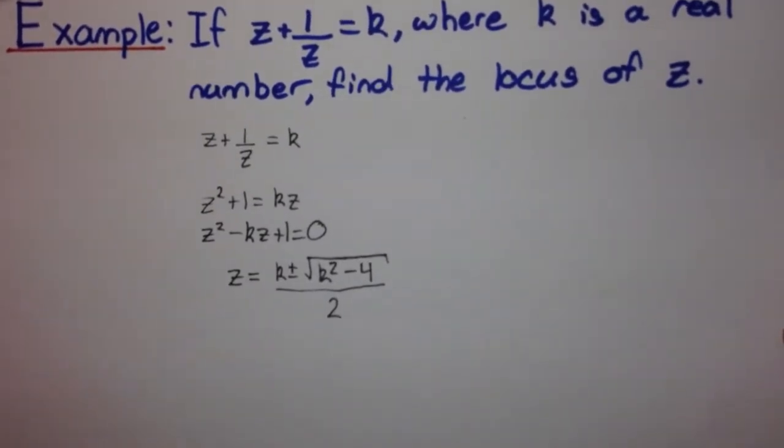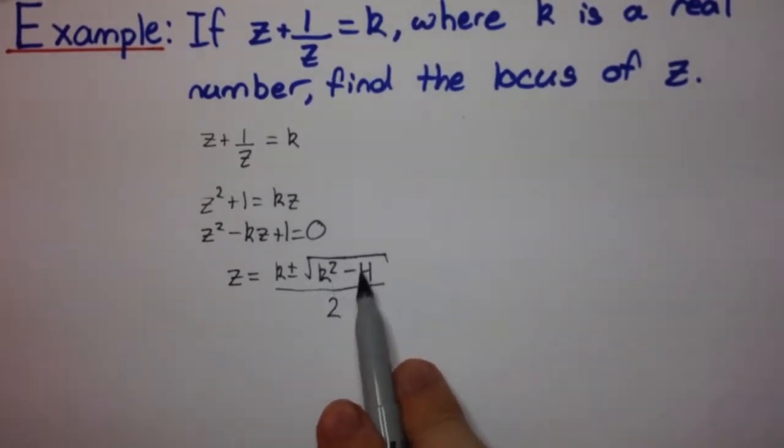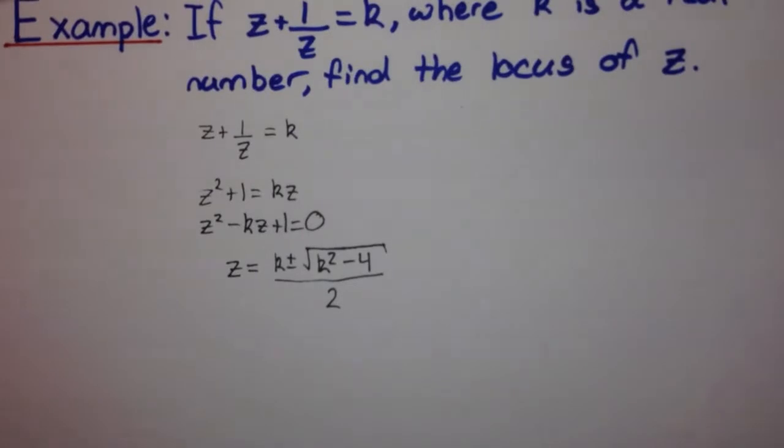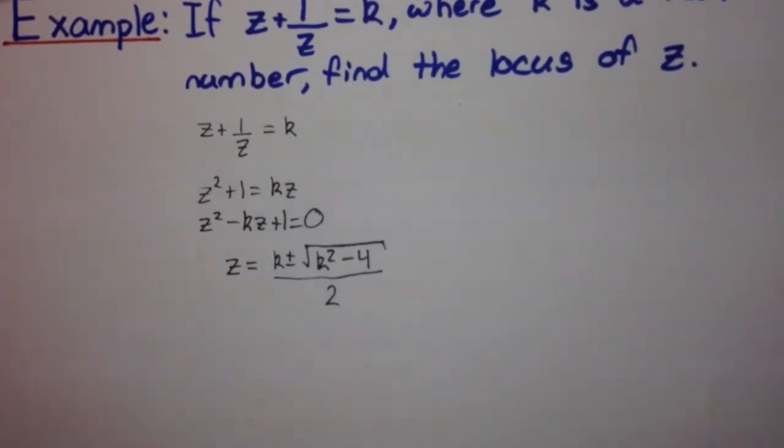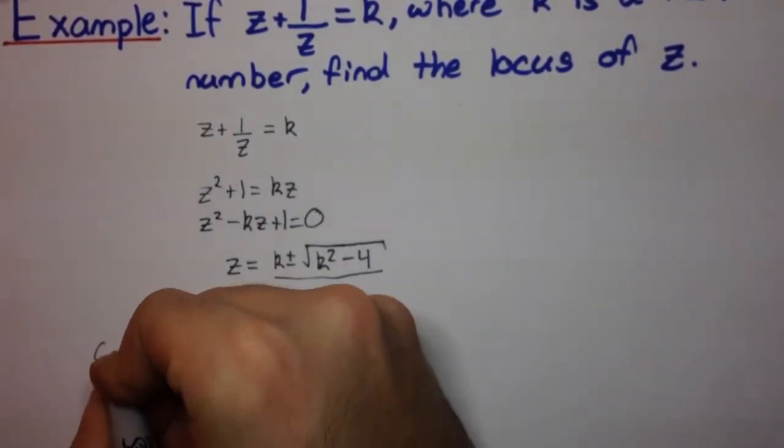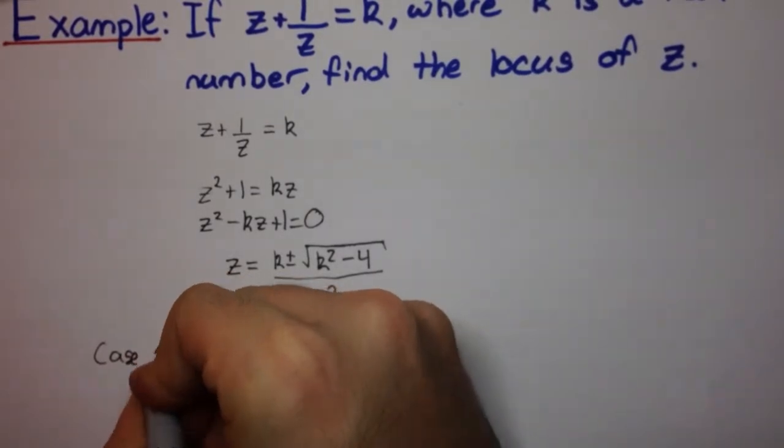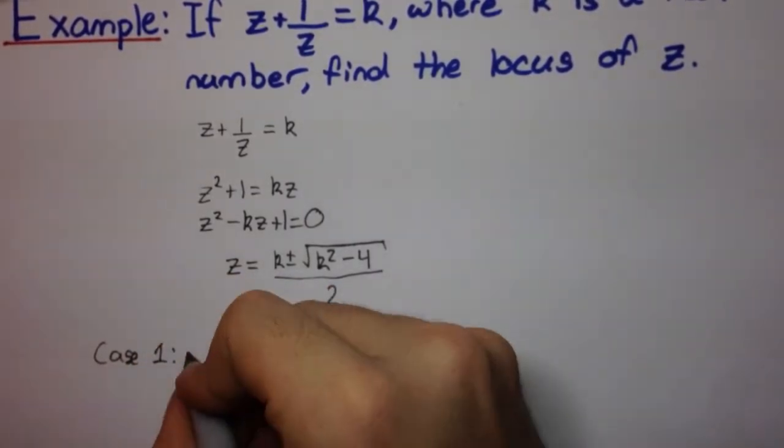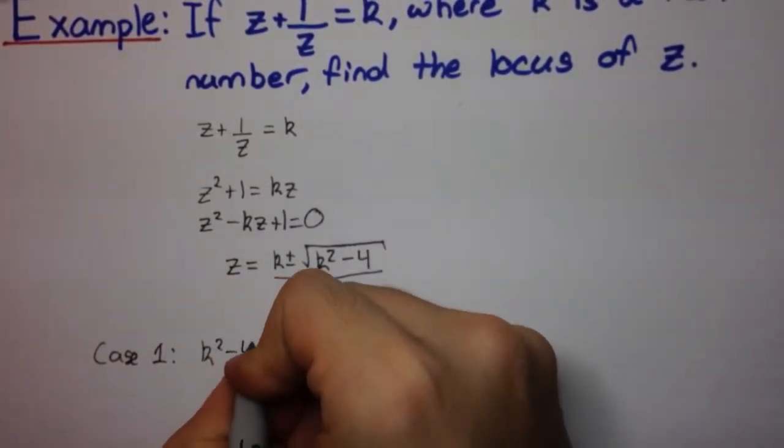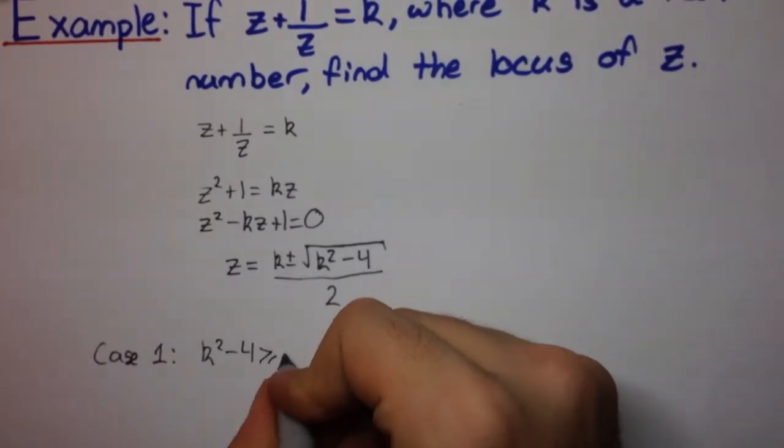We have the case where this expression under the radical could be greater or equal to 0, or we could have the case where it's less than 0. So first let's consider the case where it's greater than 0. So, case 1, k squared minus 4 is greater than or equal to 0.